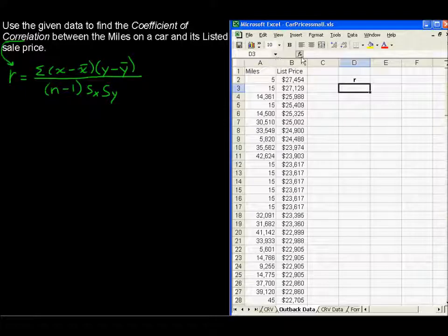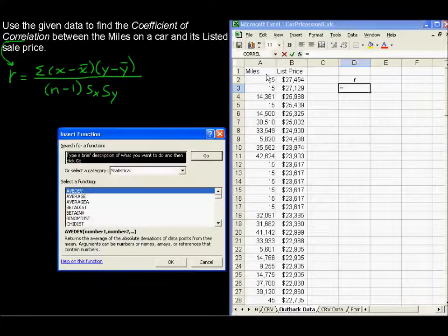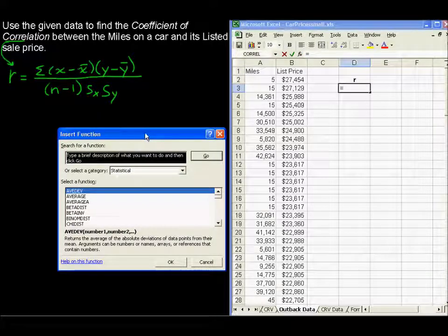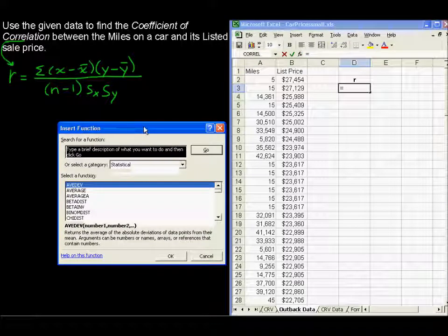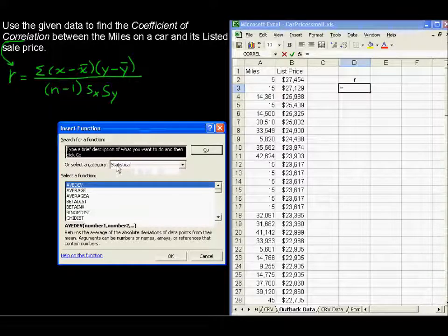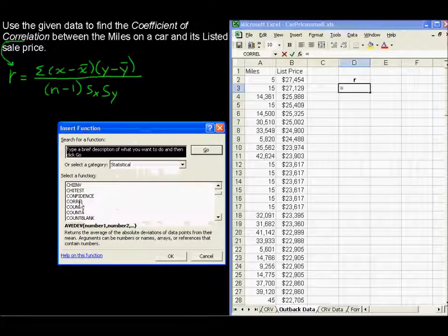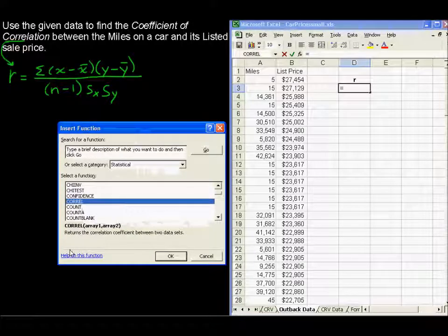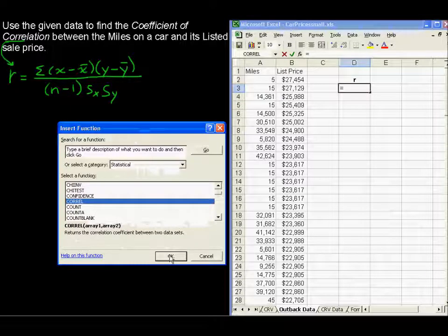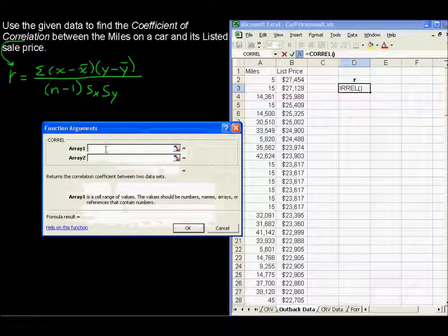So I'm going to just insert function. The function is actually CORREL, and so I want to show you, just in case you forget how that's abbreviated. So for correlation, go to insert function, statistical, and then I'm going to go down to something that looks like correlation. Here it is, CORREL. And then of course it tells you, returns the correlation coefficient between two data sets. So I'll click OK.